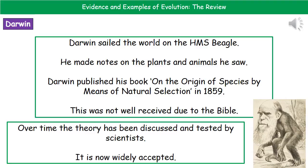He was saying that in natural selection we share a common ancestor with monkeys, but people interpreted that to mean we're just like them — hence putting his head on a monkey's body. What we've actually found is that over time this theory has been discussed and tested by scientists, and that's why natural selection is now widely accepted, because it has been tested and they can't fault it.